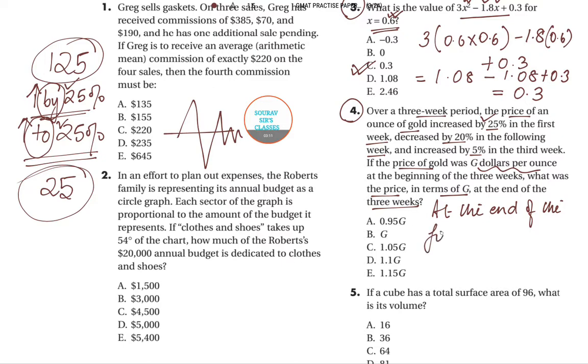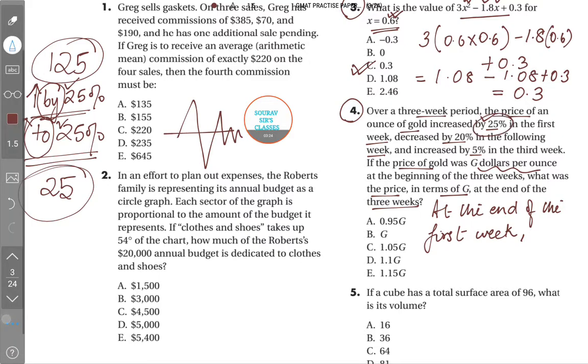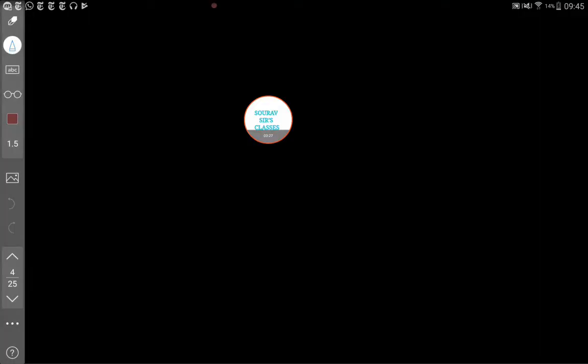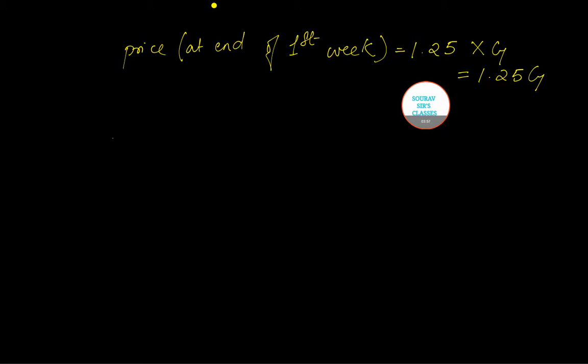At the end of the first week—we will do it in parts—if you look at just the first part, it has increased by a value of 25 percent. Let me insert a page so it will be more helpful. So it increases by 25 percent, so the price at the end of first week becomes 1.25 times G. I'm not writing in percentage. So this becomes 1.25G.